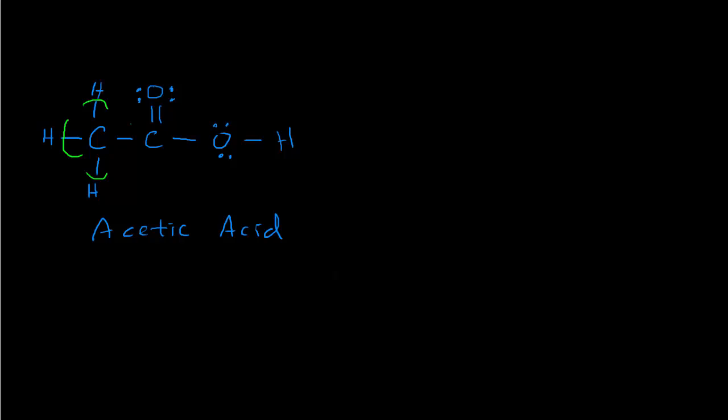Since both carbons have the same electronegativity, we divide those electrons equally — indicated by a slash through the bond line. Between carbon and oxygen, oxygen is more electronegative, so it gets all the electrons. The same applies to the other carbon-oxygen bond. For the hydrogen-to-oxygen bond, all shared electrons go to oxygen. The rule: assign all shared electrons to the more electronegative atom; if two bonded atoms have the same electronegativity, divide equally.